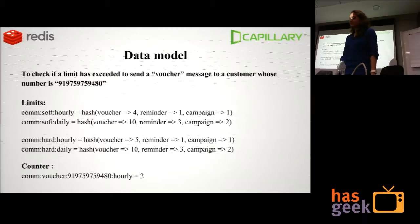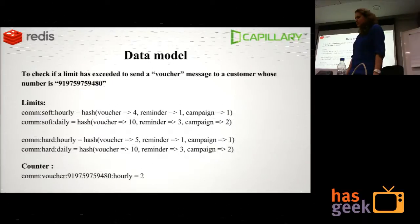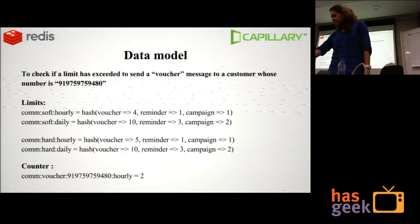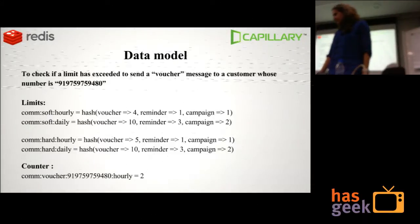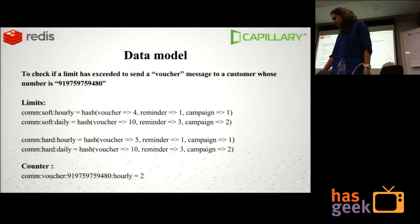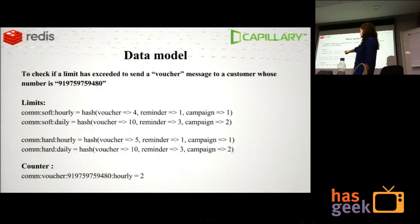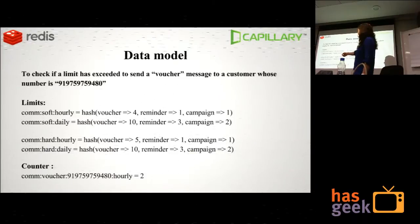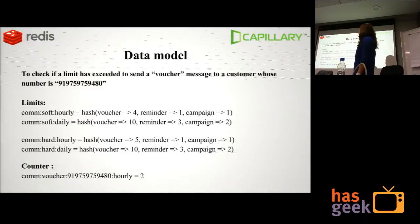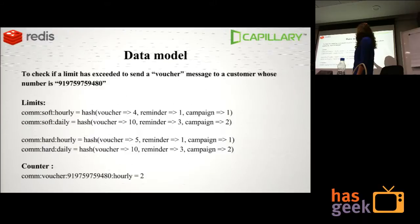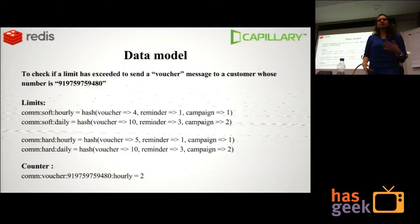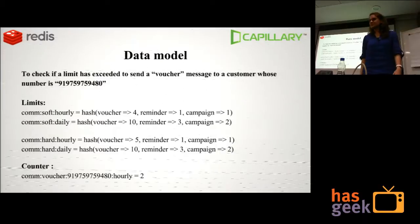Here's a concrete example: to check if we can send a message to a given mobile number — a voucher message to a customer — the key becomes the communication namespace, since it's a message going out, and it's a voucher to this customer. For the hourly window, the current count is 2 and the allowed limit is 4, so the rate hasn't been exceeded and we allow the message to go out.